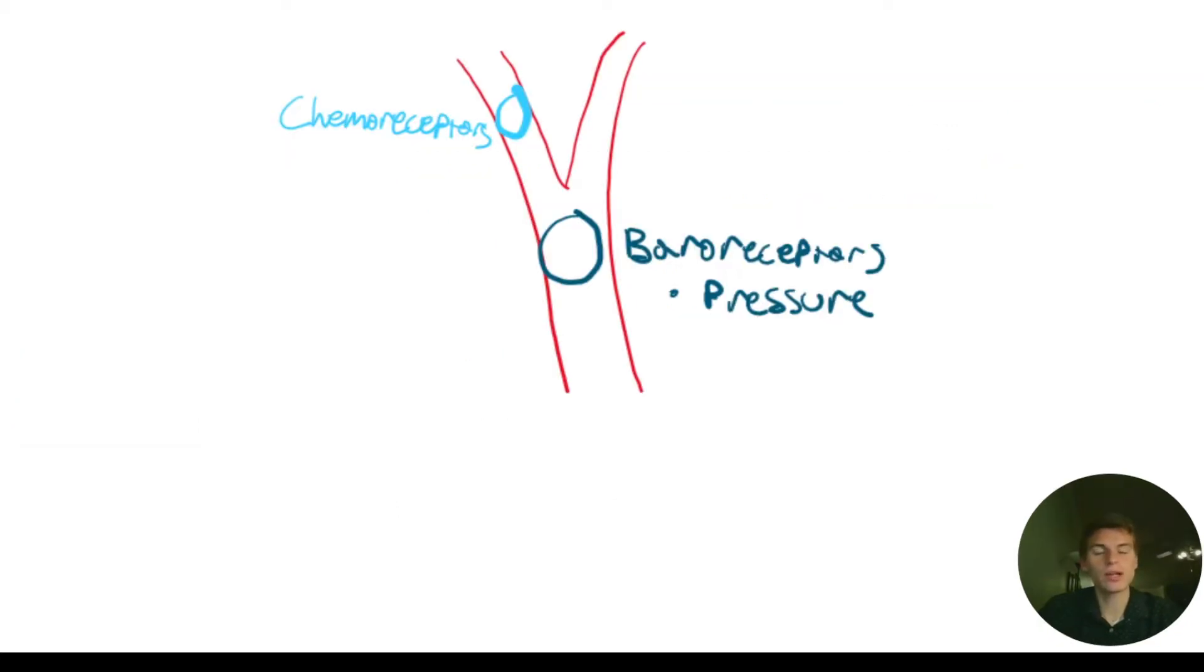To answer this question, we need to understand how the autonomic nervous system regulates our breathing. In our arteries, specifically in our carotid artery, but they're in a few other places, that's just what I've drawn here, we have things called chemoreceptors and baroreceptors.